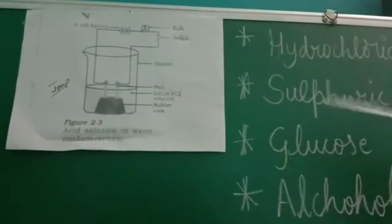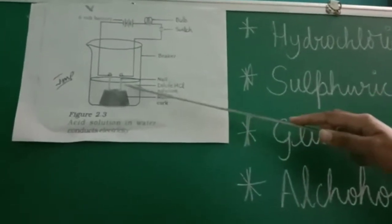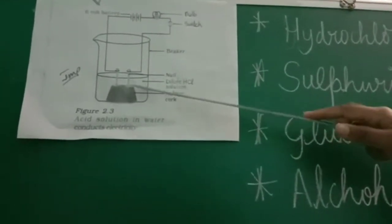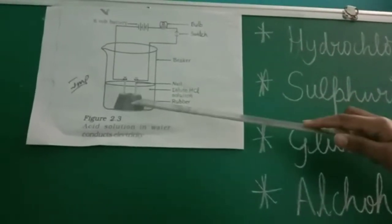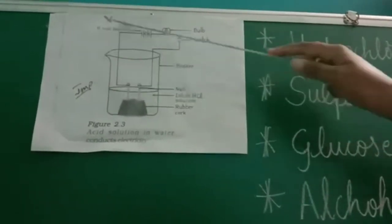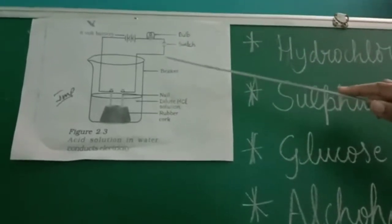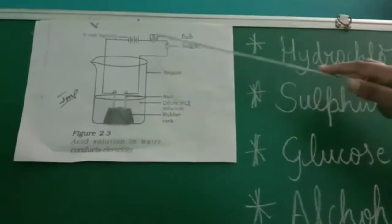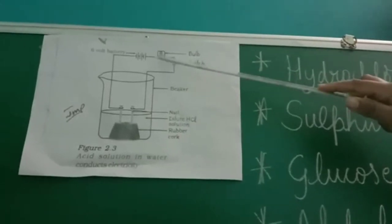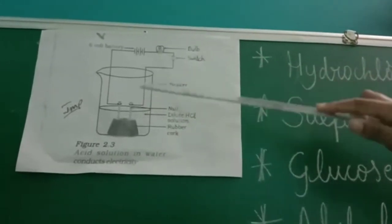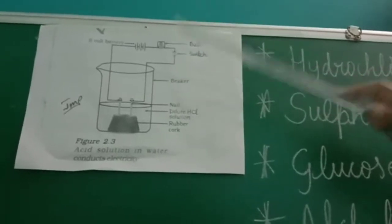Similarly, if I take one more acid, that is sulfuric acid, inside this beaker, the same experiment takes place. Sulfuric acid is poured, these nails are connected to the battery, and again the electricity starts flowing and the current starts flowing. Immediately again the bulb glows — so again there will be a conduction of electricity, a generation of electricity.